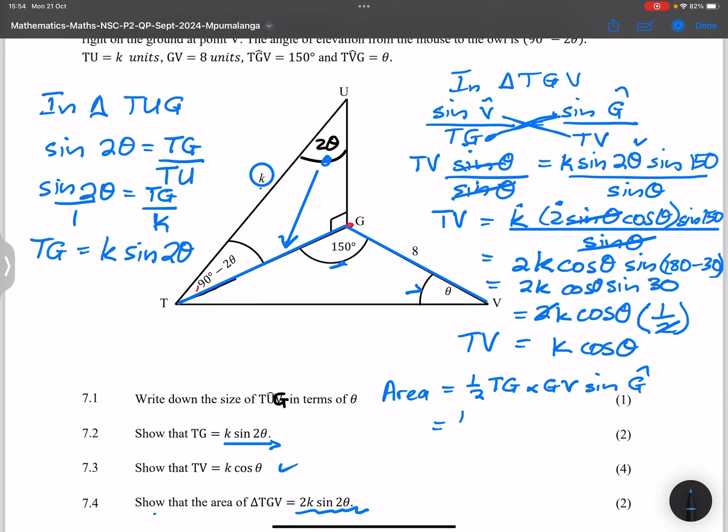All right. So now I'm going to say this is half of, sorry, this is triangle TGV. So that's half of TG. Right. So TG remember was given to us as k sin 2θ. All right. Okay. That's TG. And GV is 8. Okay. Multiplied by the sine of G. And remember we said that the sine of G, which is a sine, the sine of 150. Okay. So that's half of k into the sine of 2θ. Right. And we've got 8, the sine of 150.